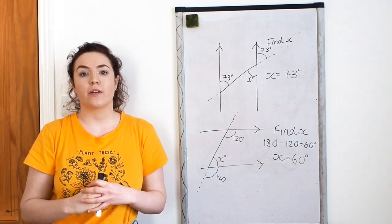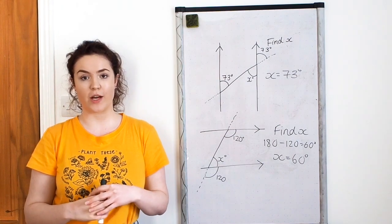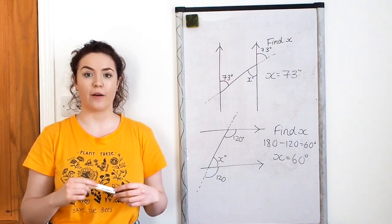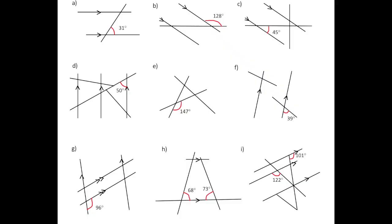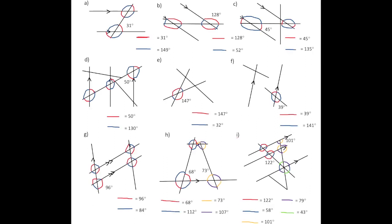You're now ready for the final set of questions on the worksheet, which I'll put up on the screen now. Go through and find as many angles as you can in each of the diagrams. The answers are now on the screen — go through and mark the ones you've done, and if you've got any wrong make sure you look over and see where you went wrong.